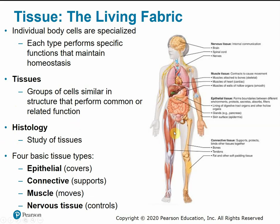There are four basic tissue types: epithelial tissues, connective tissues, muscle tissue, and nervous tissue. Epithelial tissue forms our boundaries and protects internal structures. Connective tissue supports, protects, and binds other tissues together. Muscle tissue allows for movement via contraction, and nervous tissue is our internal body communication system.